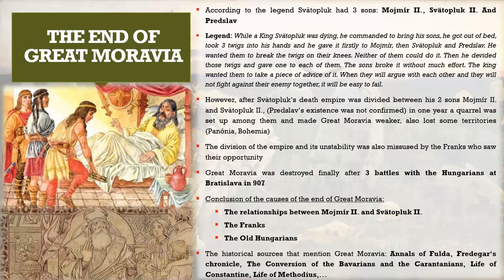To summarize the causes of the end of Great Moravia: first, the poor relationship between Mojmír the Second and Svätopluk the Second, who could not agree on developing the country; second, the Eastern Franks who wanted to exploit the situation; and third, the old Hungarians who came to this territory and wanted to settle there.